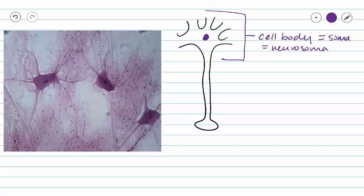And generally it is also attached to dendrites. All of these connections here are dendrites. And what is the function of a dendrite? A dendrite is going to serve to receive signals from other cells.